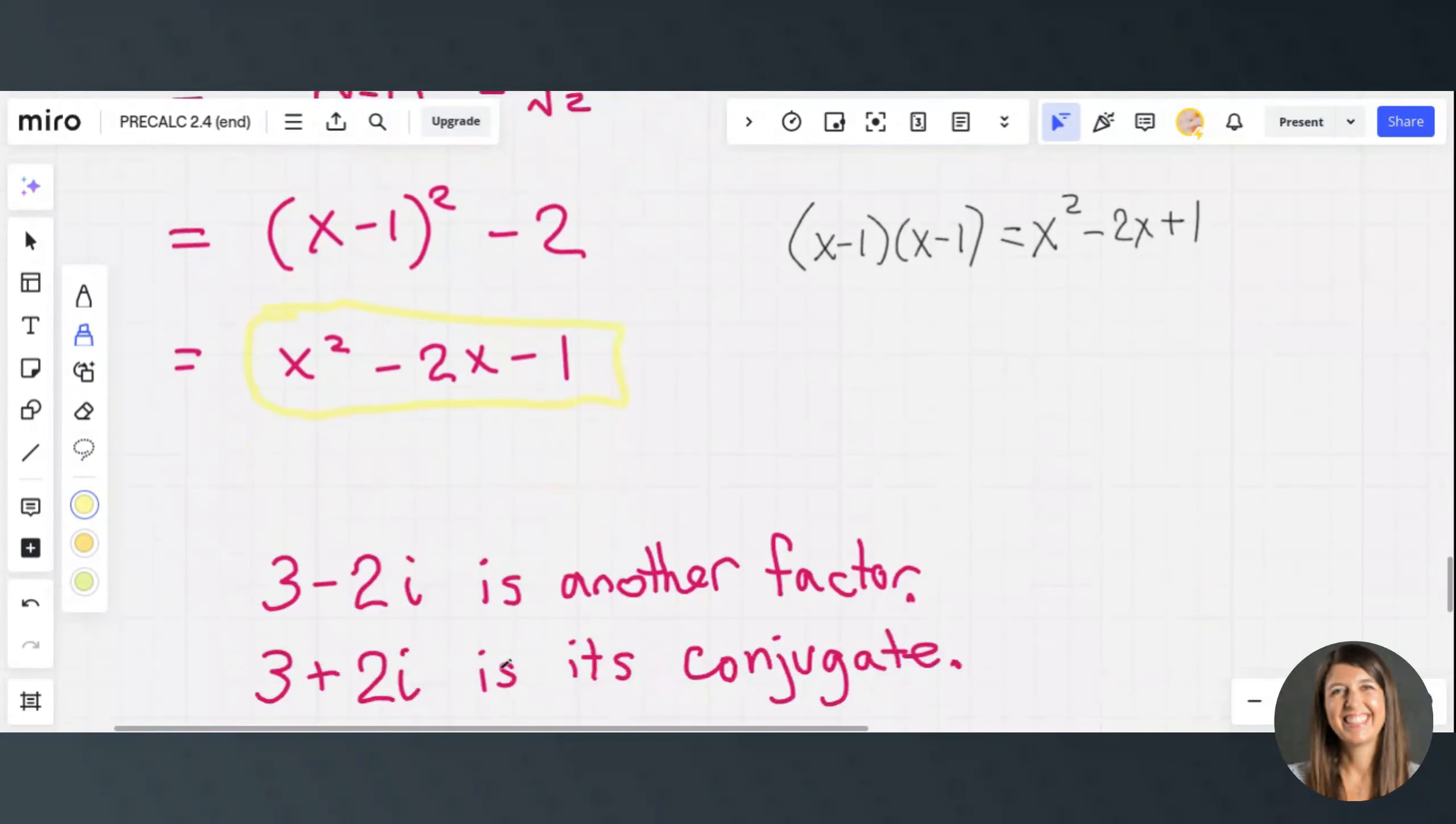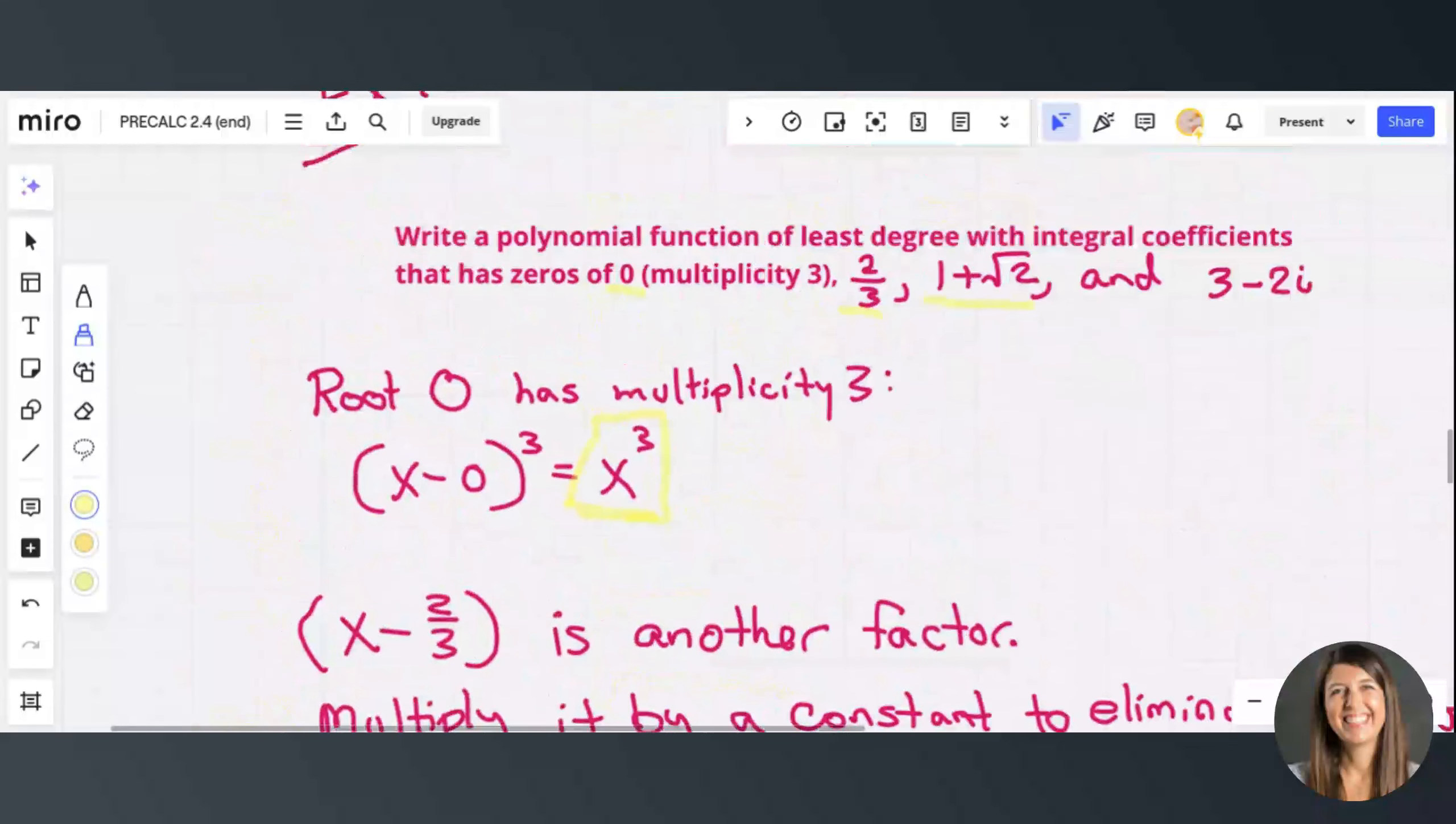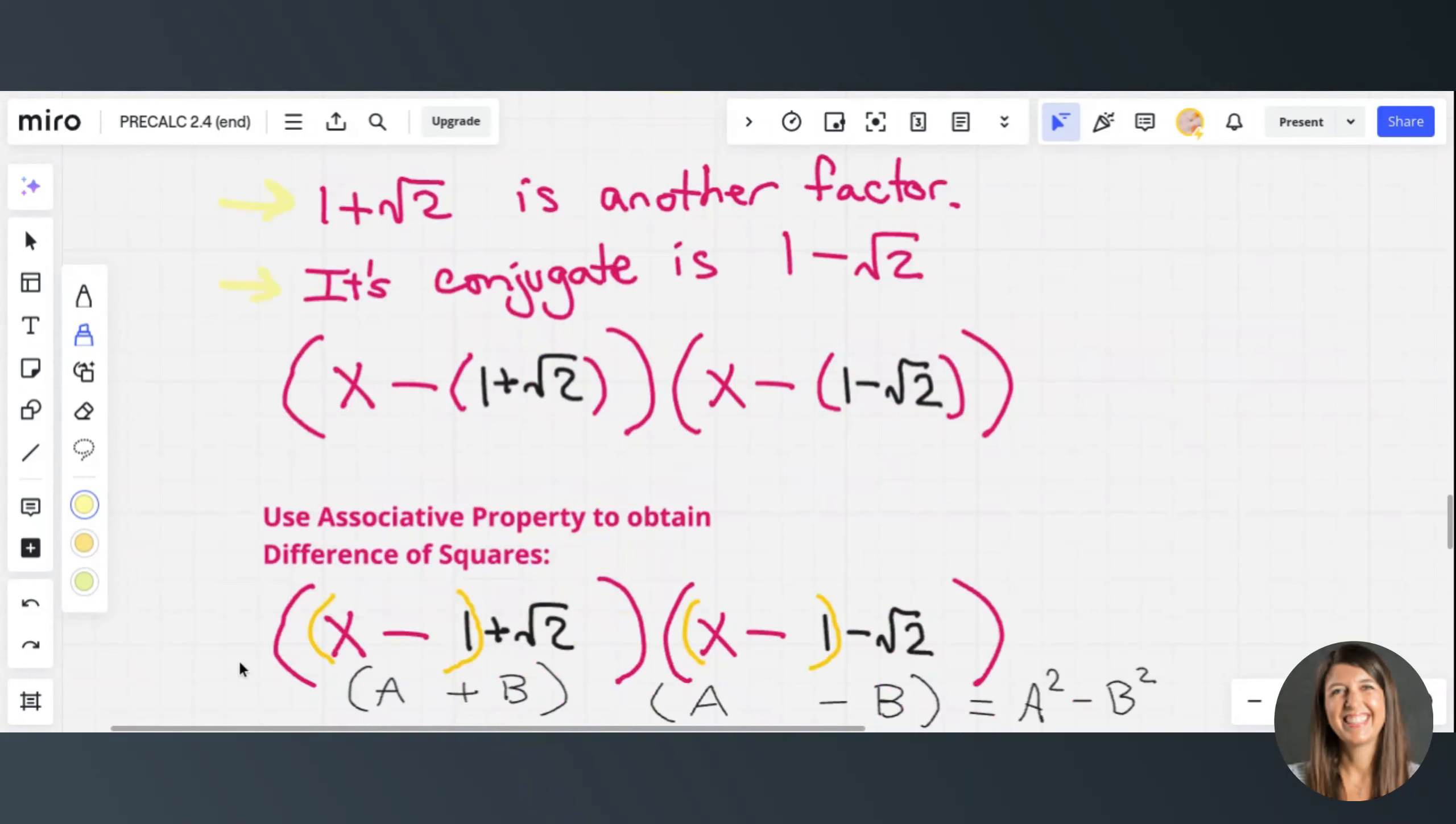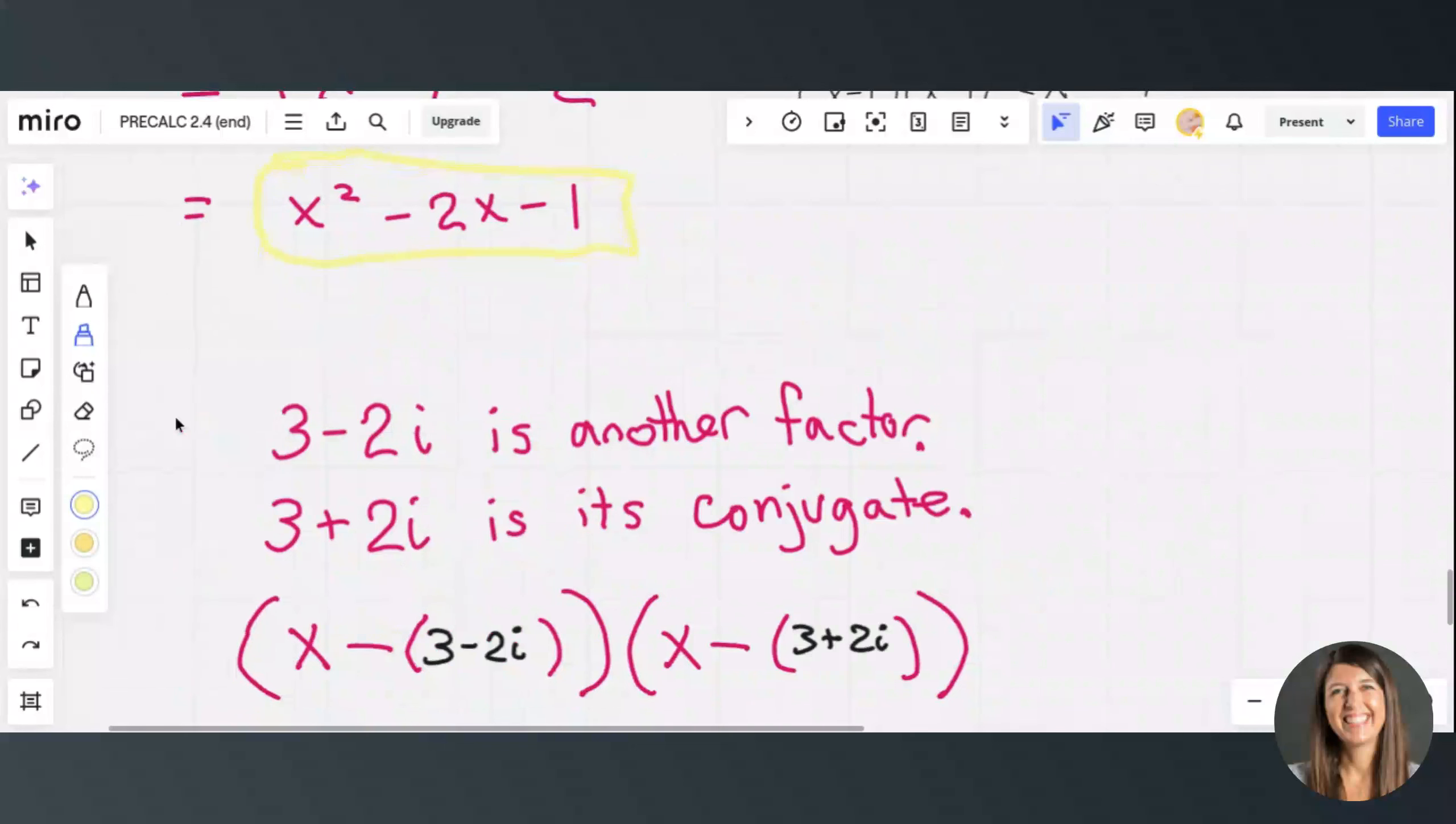Now we're going to do it for the final root. So if we go back here at the top, we can see that the last root is 3 minus 2i. So if 3 minus 2i is another root,